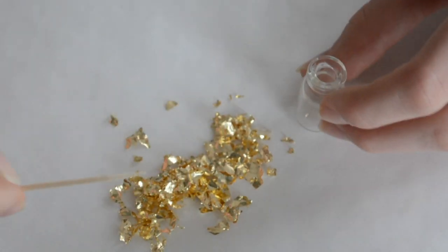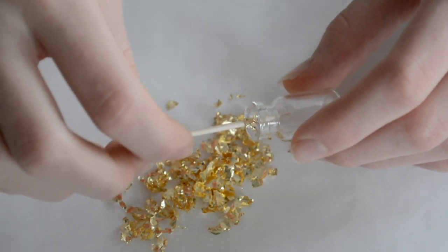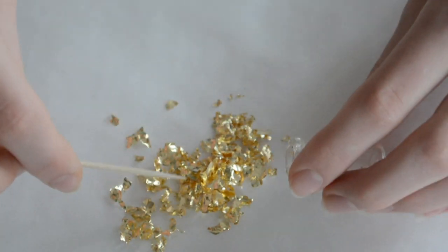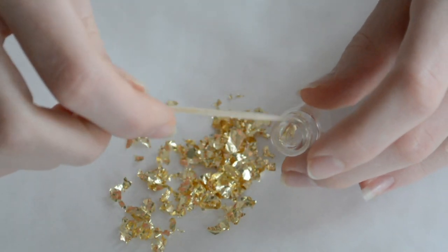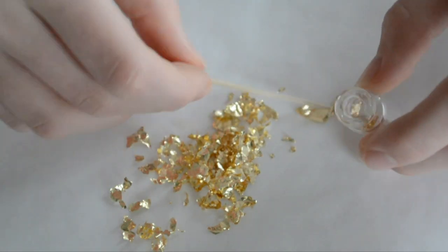Once you've ripped up enough that you think it's gonna fit into your jar, then you're gonna start taking a toothpick and grab your little tiny jar and then just start piling in the ripped up gold leaf. Try to put in as much as you'd like.